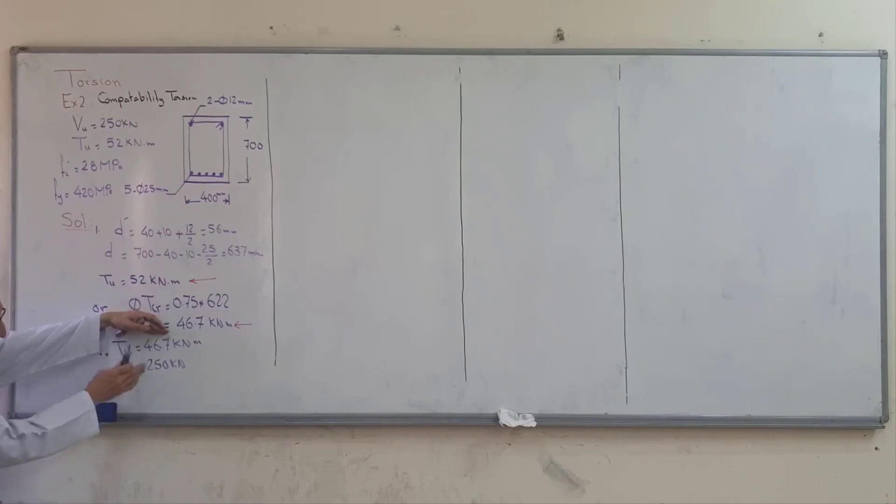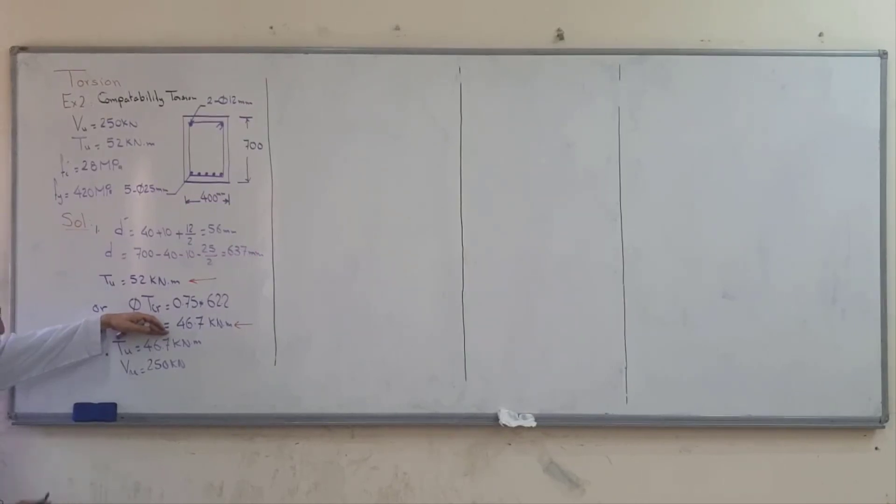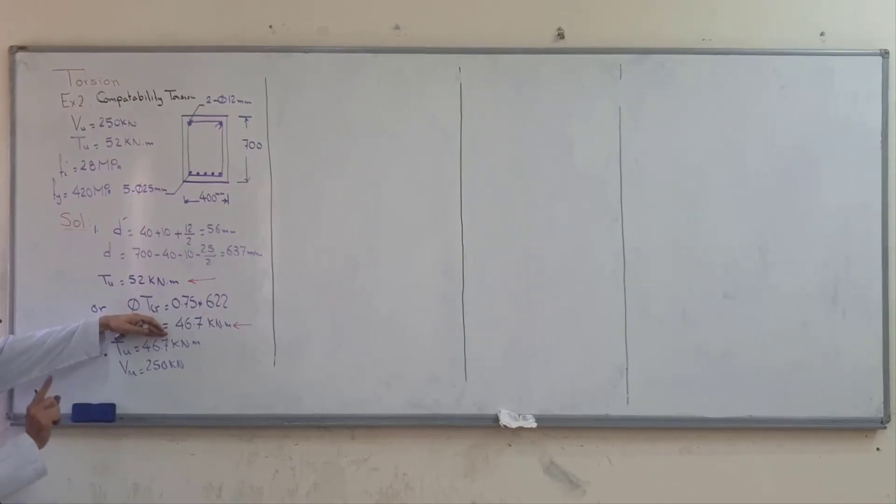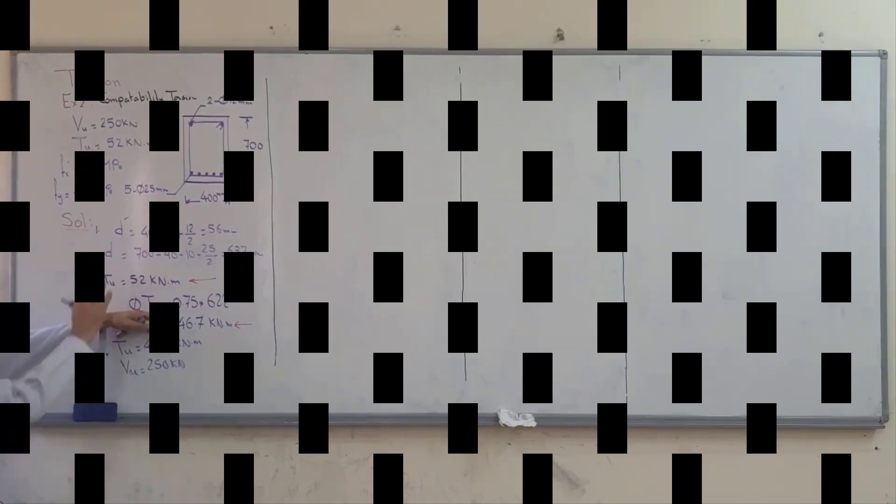We repeat all the steps from example number one, the previous example, exactly the same steps. Just the difference is instead of 52, use 46.7. Forget 52 in this example.